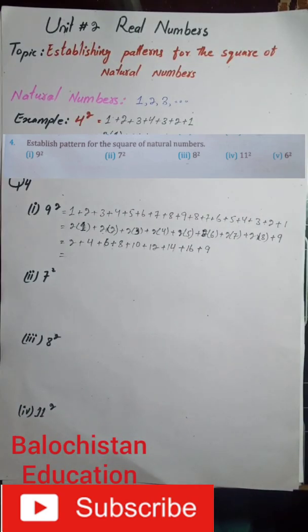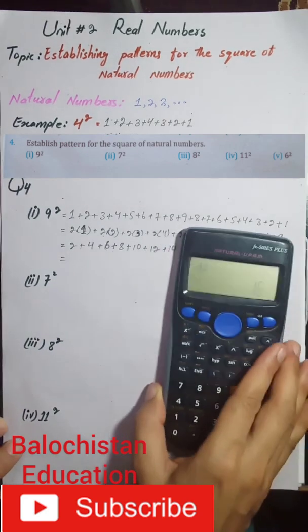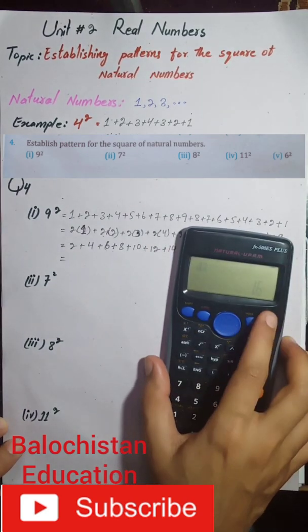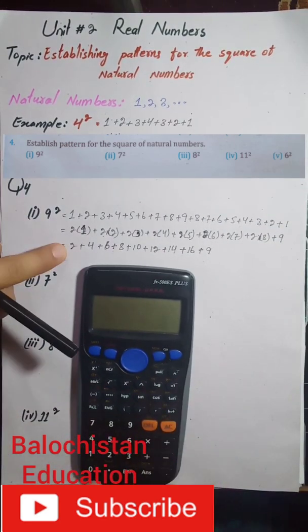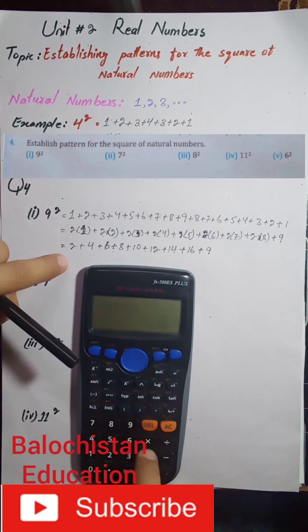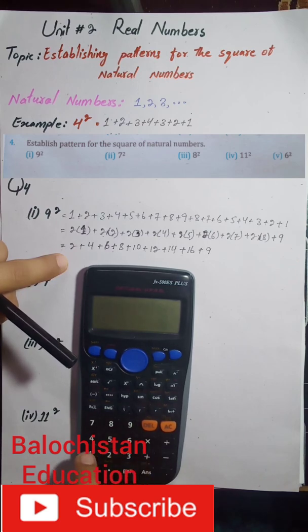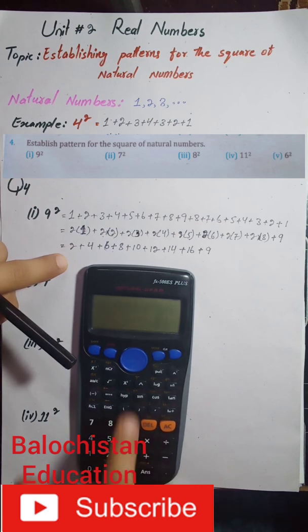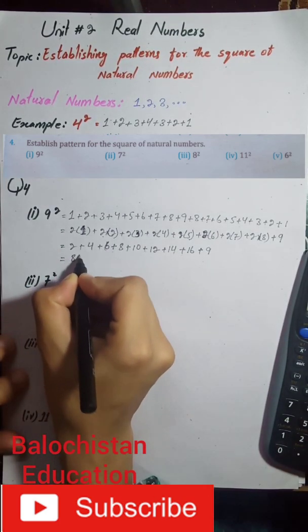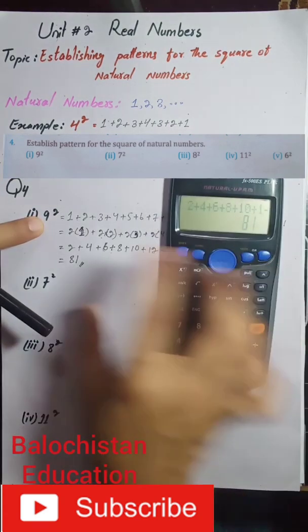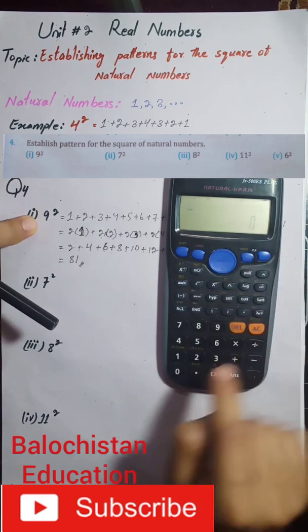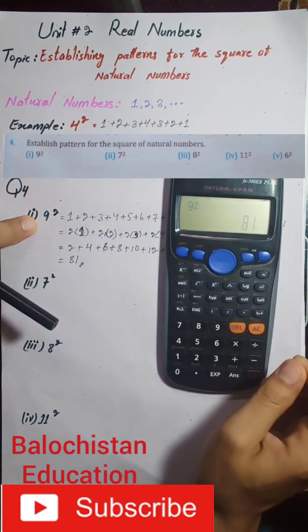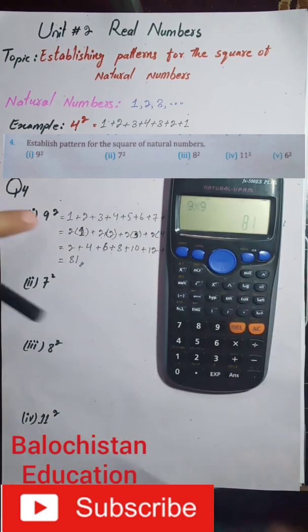Adding 2 plus 4 plus 6 plus 8 plus 10 plus 12 plus 14 plus 16 plus 9 equals 81, which is the square of 9. And if you want to verify: 9 multiplied by 9 is 81. As we know, the square of a number is the result of multiplying the same number with itself.